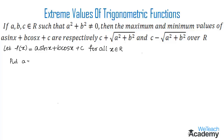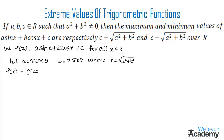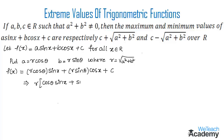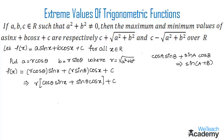Let us put a equal to r·cos(theta) and b equal to r·sin(theta), where r equals square root of (a squared plus b squared). Substituting the values of a and b into f(x), we get f(x) equals r·cos(theta)·sin(x) plus r·sin(theta)·cos(x) plus c. Taking r as a common factor gives r times [cos(theta)·sin(x) plus sin(theta)·cos(x)] plus c. Using the formula cos(A)·sin(B) plus sin(A)·cos(B) equals sin(A plus B), and replacing A with theta and B with x, we get f(x) equals r·sin(theta plus x) plus c.